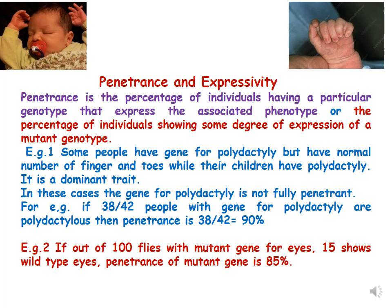For example, there are 42 people who have the gene for polydactyly, but out of these 42, only 38 express this gene and show polydactyly in their fingers. So we say that the penetrance of the polydactyly gene is 90%, because it is only in 38 out of 42 people that this gene is showing expression.